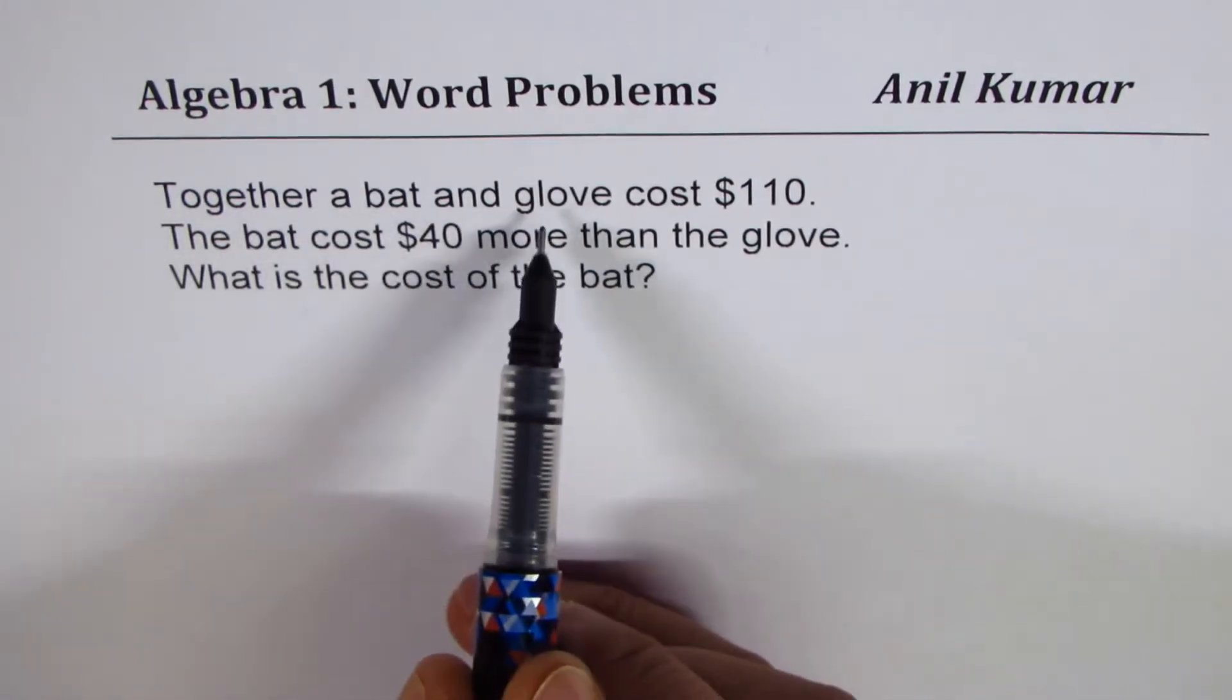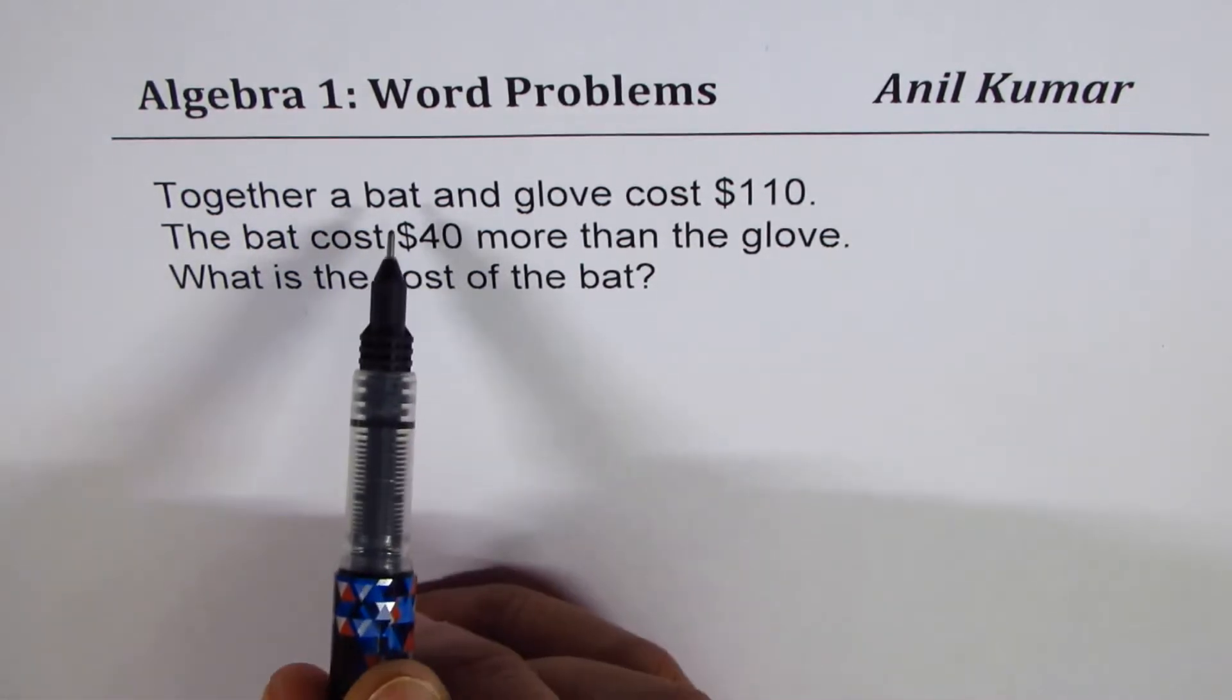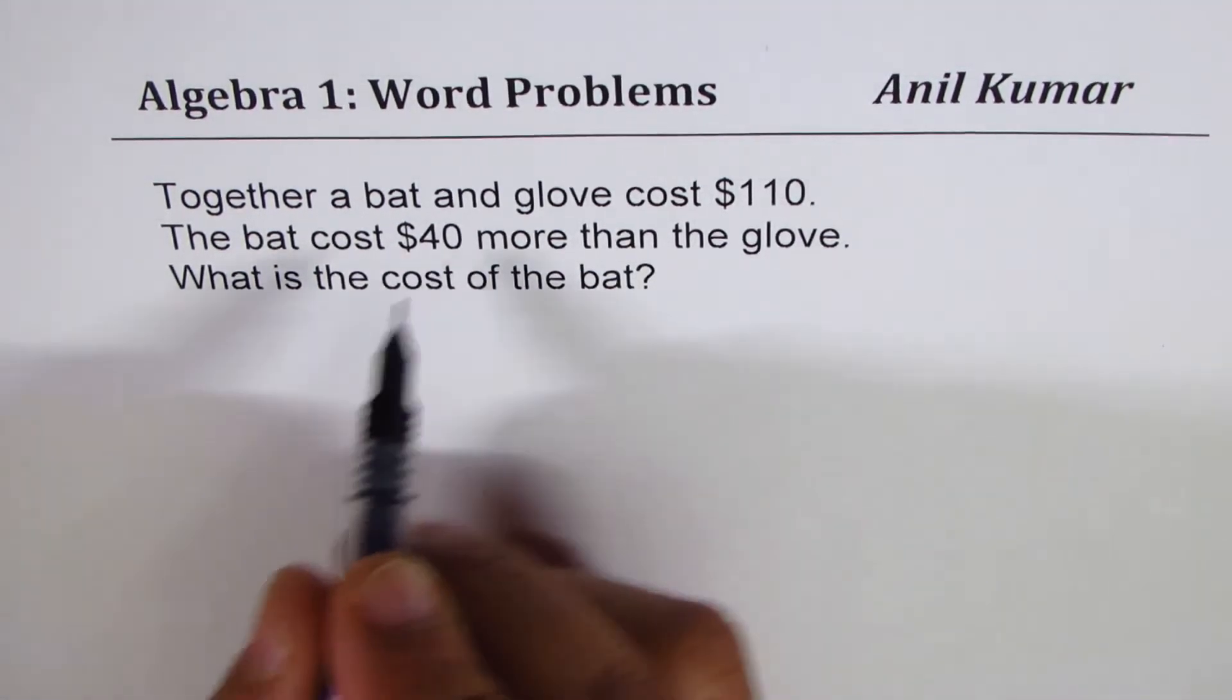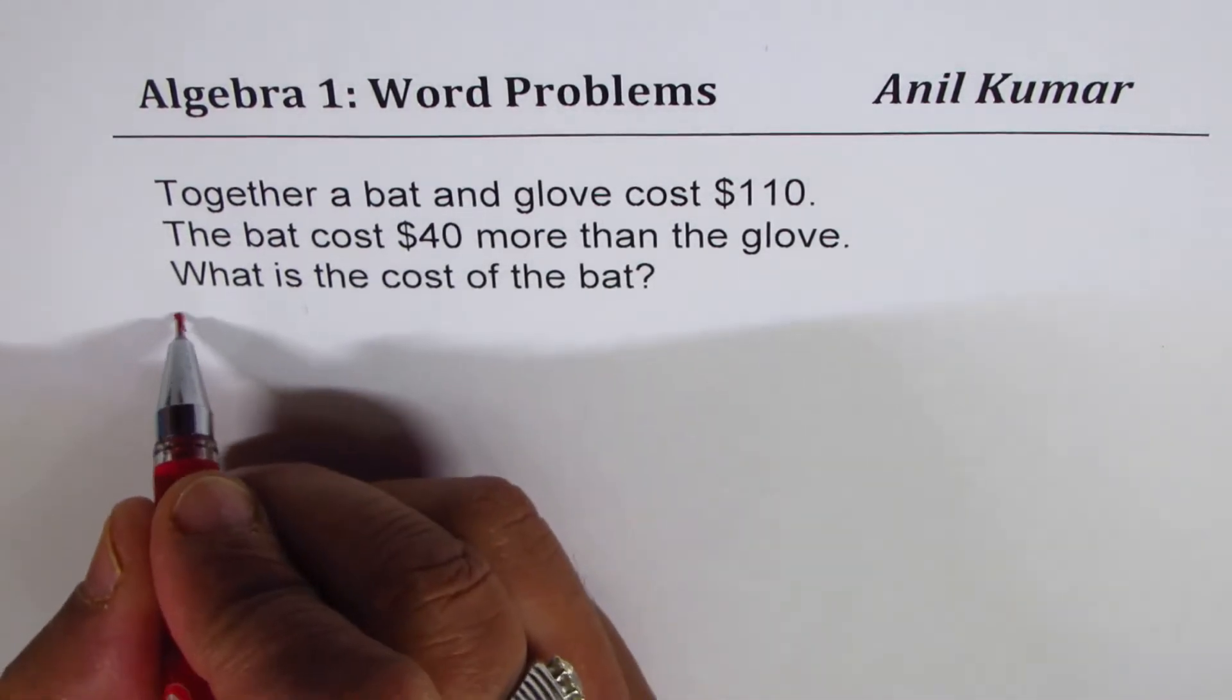Now, together a bat and a glove cost $110. This is a complete statement which will give you an equation. But before getting into equation, let's define variables. So, the first step will be define variables.